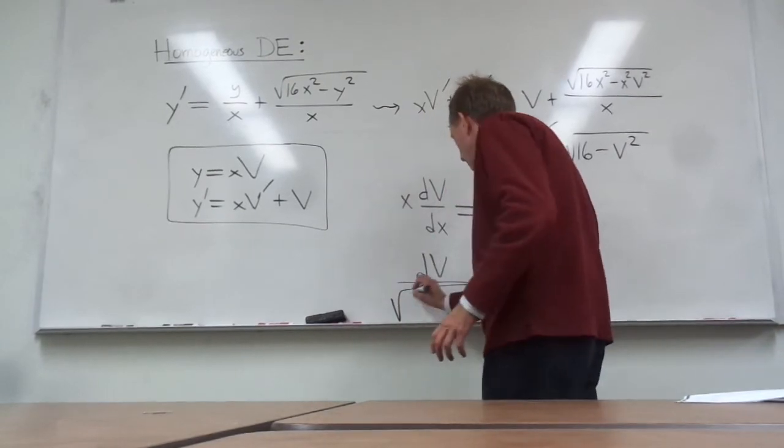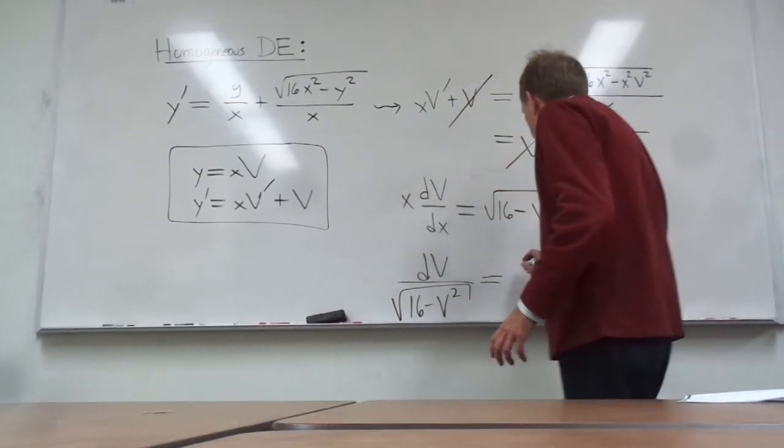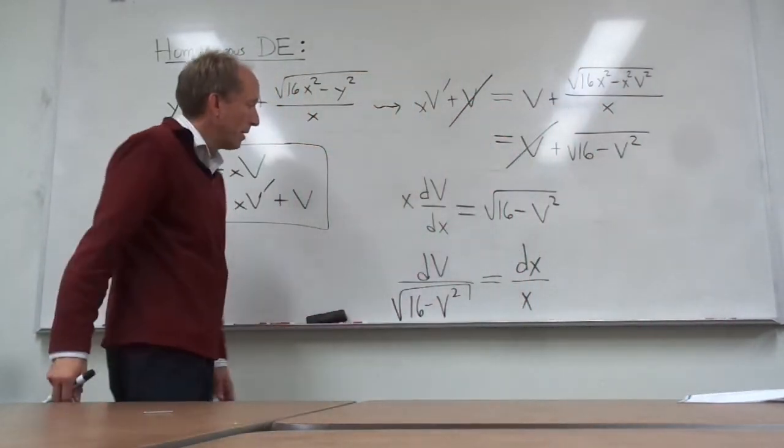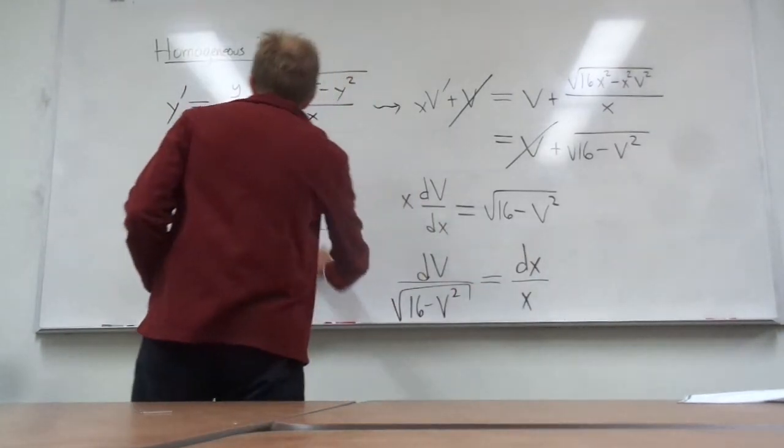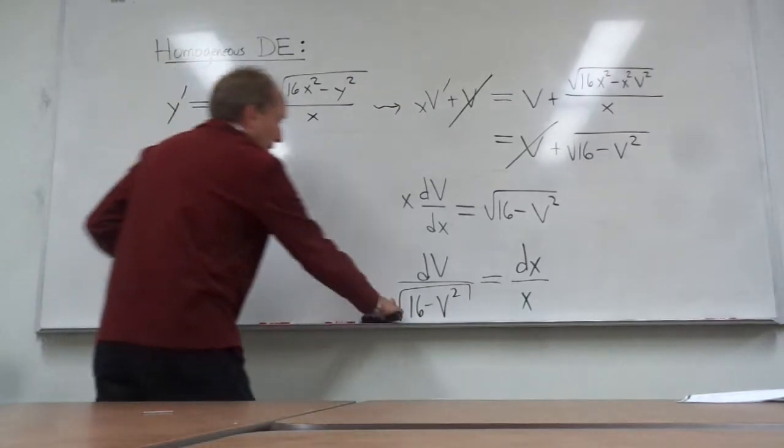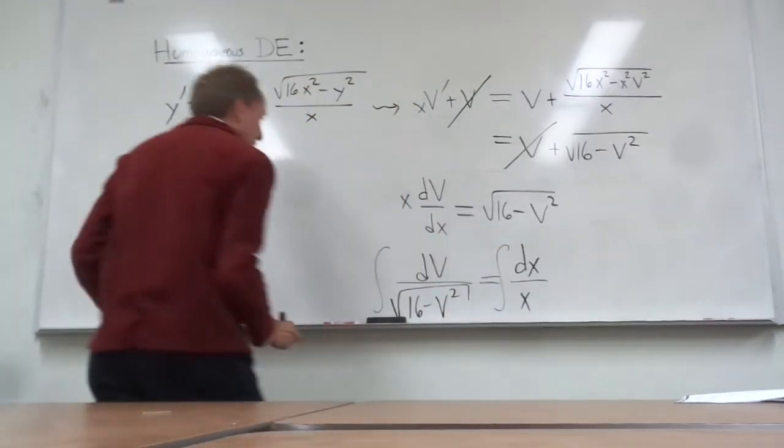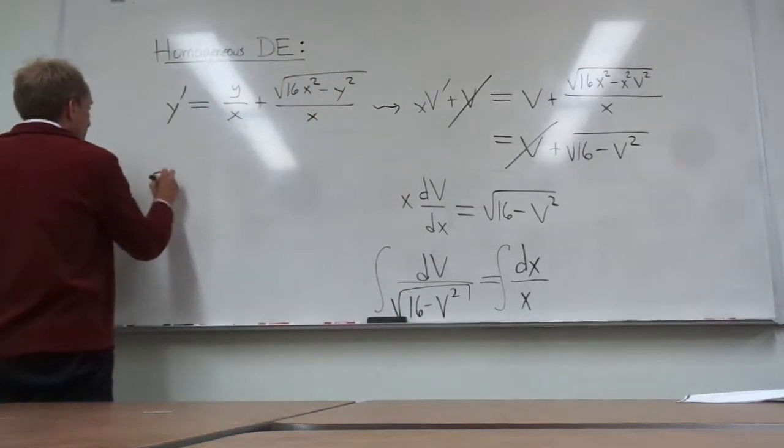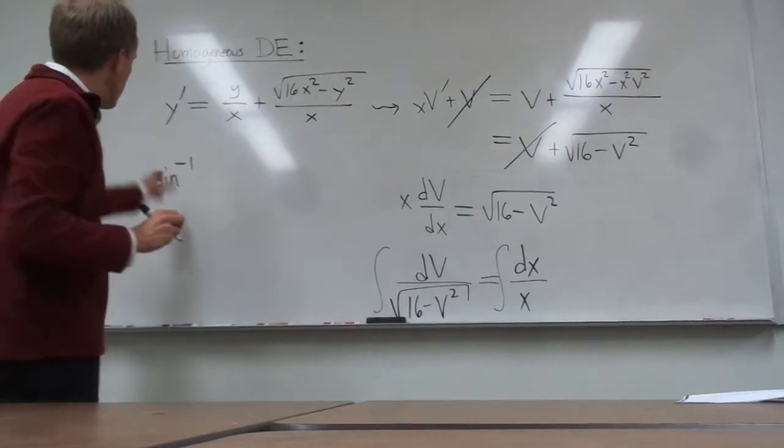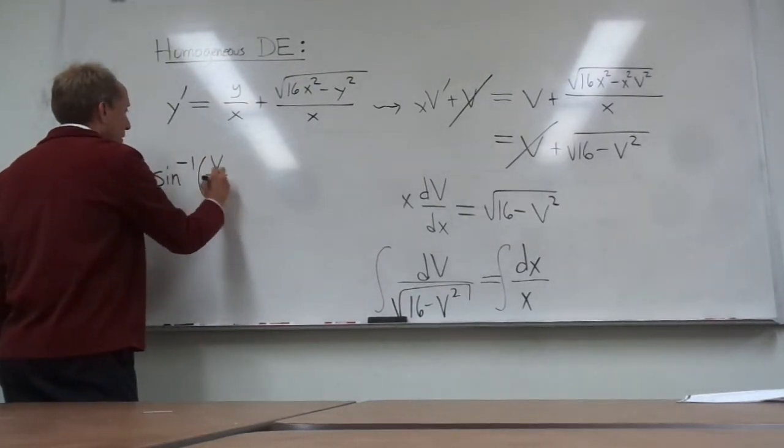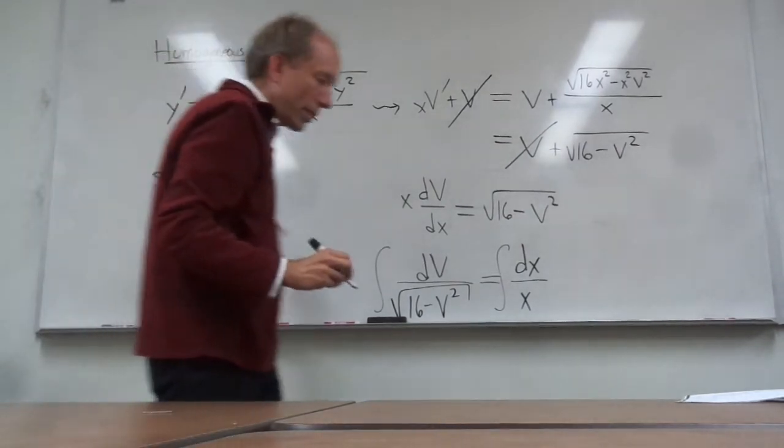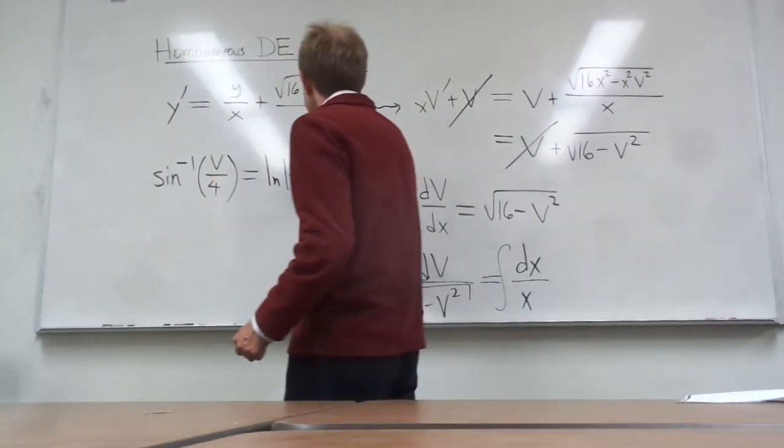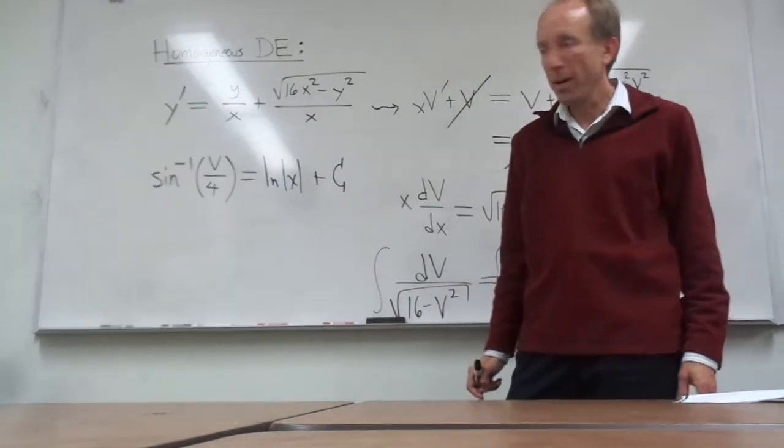I'm going to divide by the square root of 16 minus v squared. And I have to throw the dx to the other side and divide by the x that was on the top there. So, we've got the v's and the x's totally separated now. So, we just have to integrate both sides. The one on the left is actually a standard integral. It would be in any table of integrals that you would have. It turns out it's an arc sine. And what it would be in this case, if you look it up in a table, it's the arc sine of the quantity v over 4. The right-hand side, of course, is the ln of the absolute value of x. And then we put our plus c there.